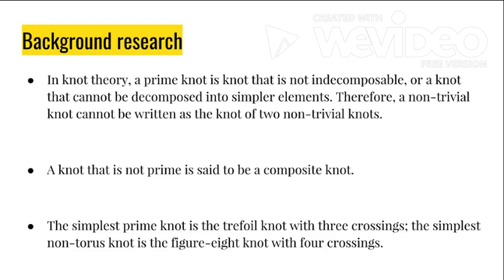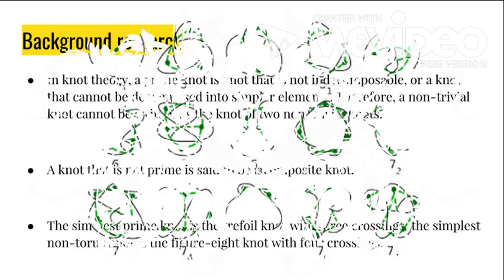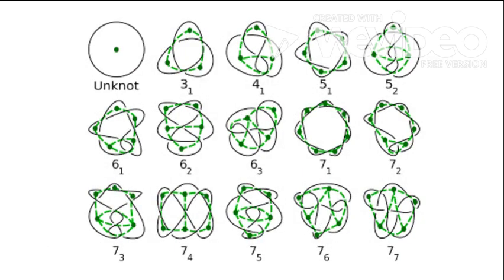The simplest prime knot is the trifold knot with three crossings. The simplest non-trivial knot is a figure eight knot with four crossings. An example would be located in the second column, first row. This is a trifold knot, and the rest of the knots you are seeing are prime knots.